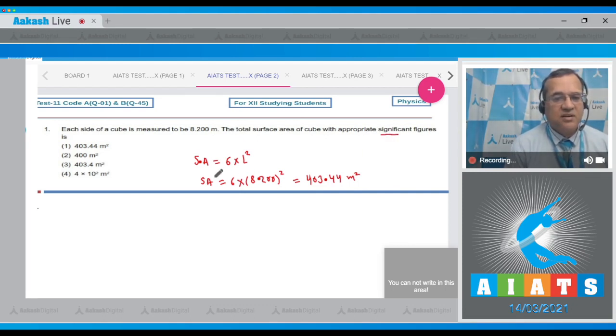But with regards to significant figures, you have to select it with the same number of significant figures as is here, that is four. So the answer should be 403.4 meter square. Looking at the options, option three equals 403.4 meter square, so the answer is three.